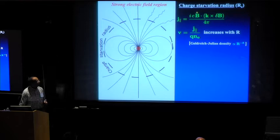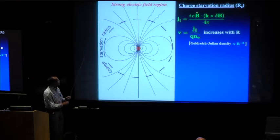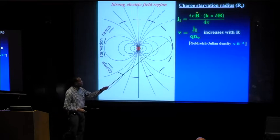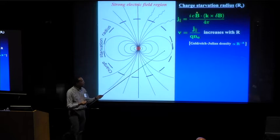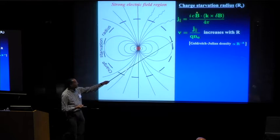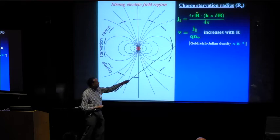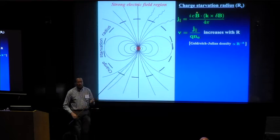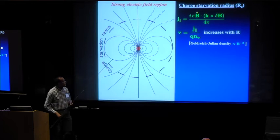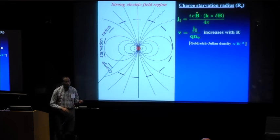The current that is being carried by electrons and positrons - the speed at which they are moving, we can calculate that from the current dictated by curl of delta B divided by the charge particle charge and their number density. So the V is something that is increasing with distance, with increasing radius.